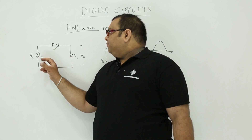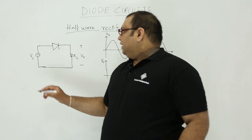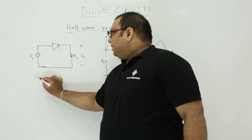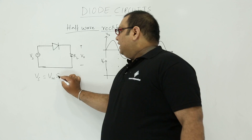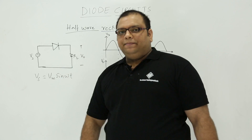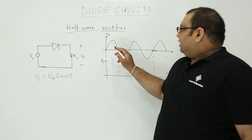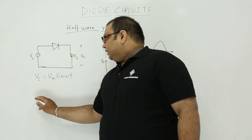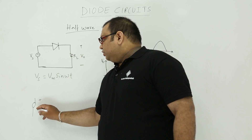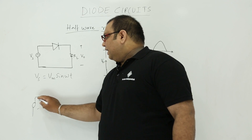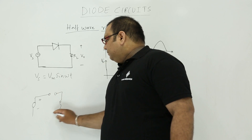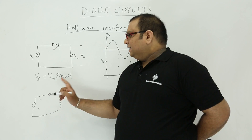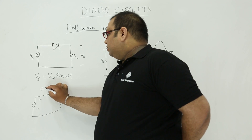In this circuit, the input will have an alternating current: positive half, negative half, positive half, negative half. Let us take the supply Vs equal to the maximum voltage Vm — the peak voltage — and this waveform is taken as Vm sin(ωt). Now, when you observe the diode working: when a positive voltage is applied, in the positive half the diode will start conducting and acts as a short circuit.